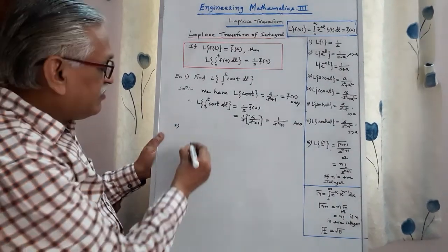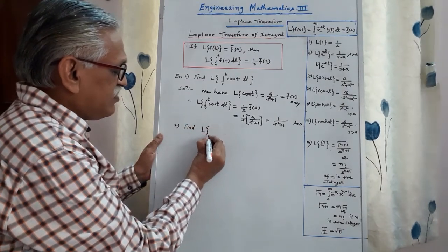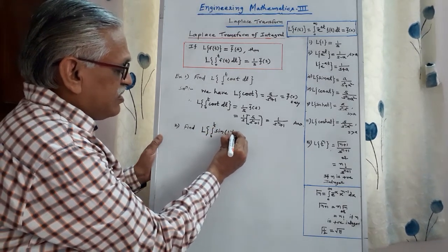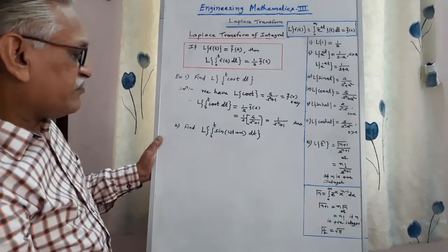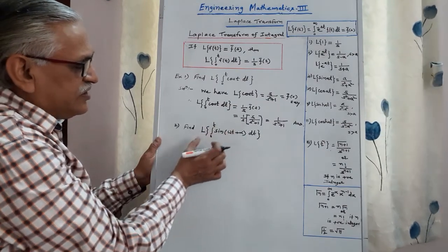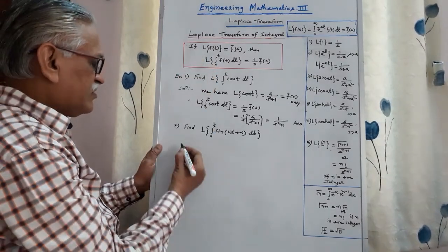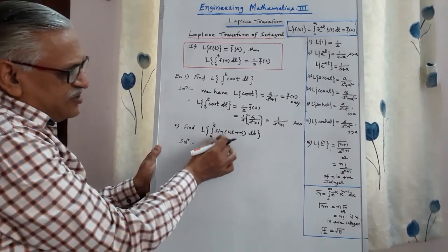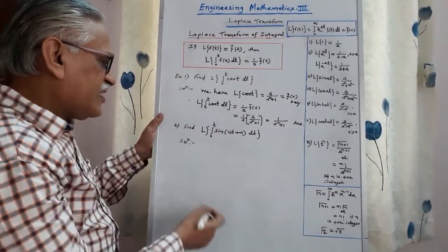Second example: find the Laplace Transform of the integral from 0 to t of sin(ωt + α) dt. Therefore, here f(t) is sin(ωt + α), integration from 0 to t, and its Laplace we have to obtain. We apply the same theorem. In an earlier video, I have explained how we can obtain the Laplace of sin(ωt + α), so repeating that step here.